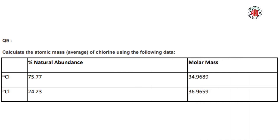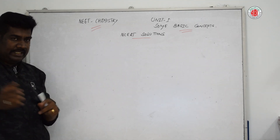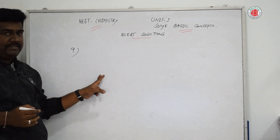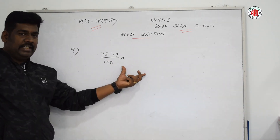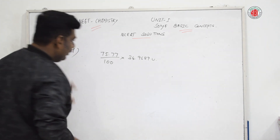The next question: calculate the atomic mass of chlorine using the following data. The percentage natural abundance and molar mass are given: Cl-35 has 75.77% abundance with molar mass 34.9689, and Cl-37 has 24.23% abundance with molar mass 36.9659. We are going to find the average atomic mass of chlorine.